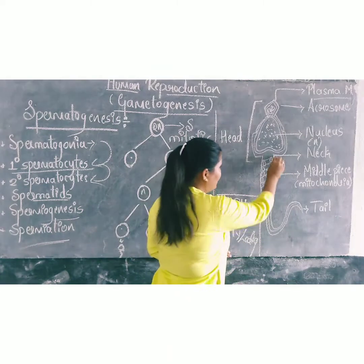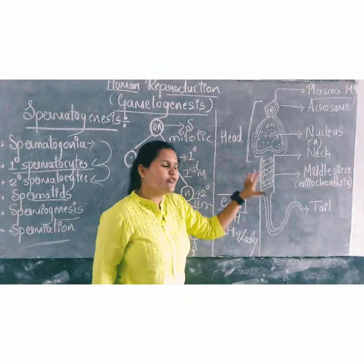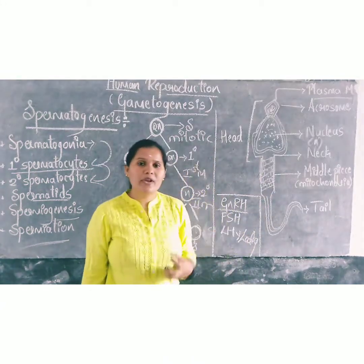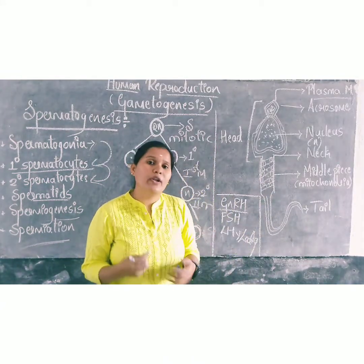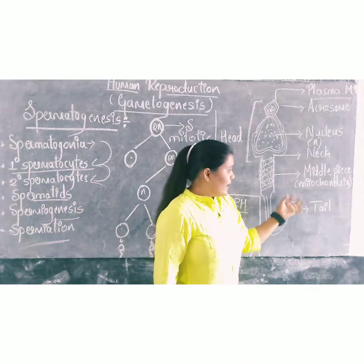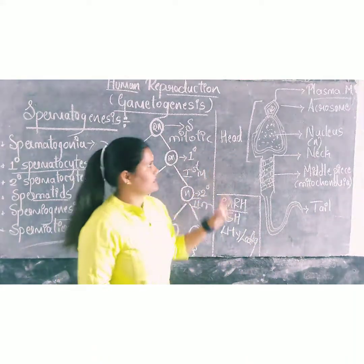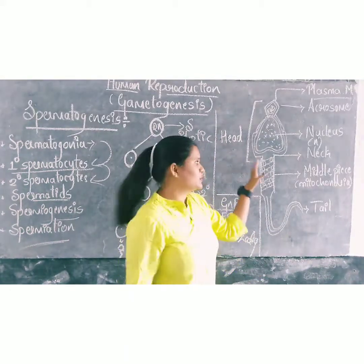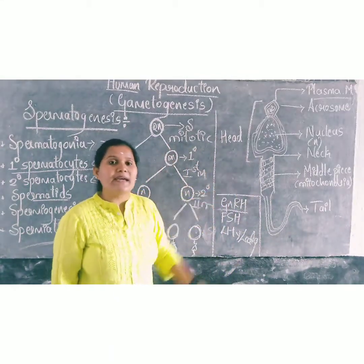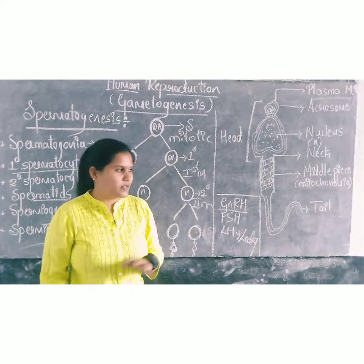Coming to the middle piece, it consists of numerous mitochondria. These mitochondria help in the movement or motility of the tail. The tail helps in motility. This is the basic structure of the sperm. Please do remember the structure of the sperm, as it is very important from the exam point of view.